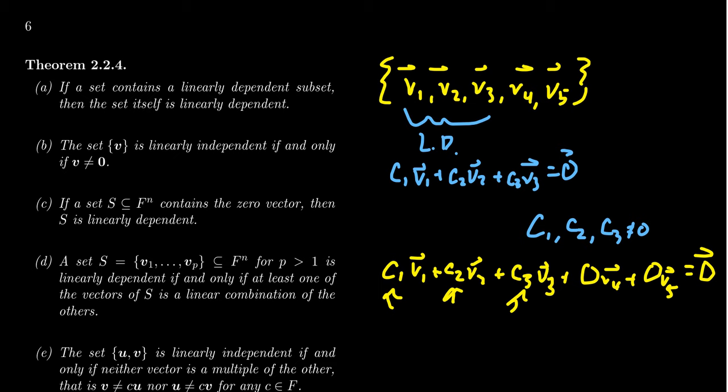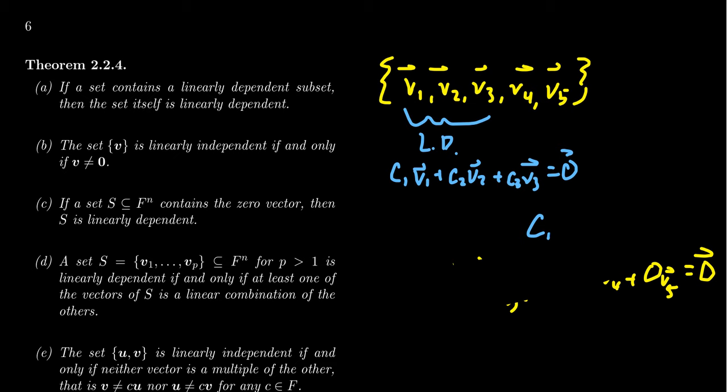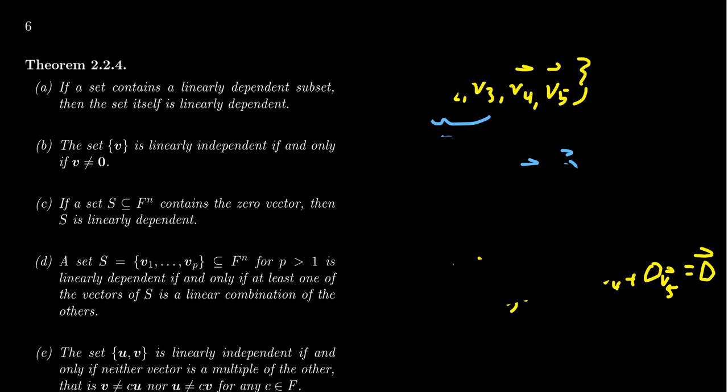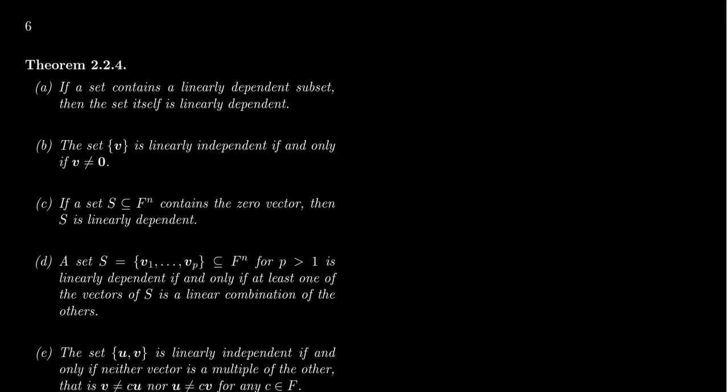So dependence is a cancer. Once any part of the set becomes dependent, the whole set becomes dependent. If a subset is dependent, then the whole set will be dependent as well.